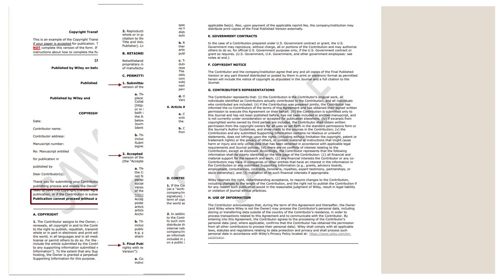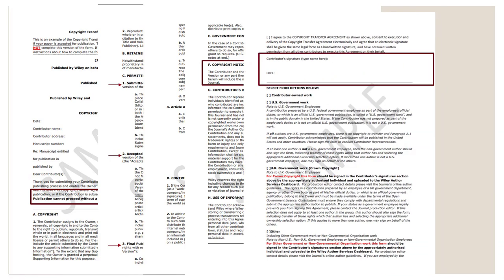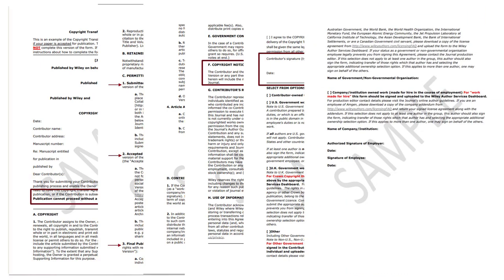Right here on page four, it says copyright notice — so Wiley will be placing that little C in a circle somewhere on the article that you are publishing with them. On the next page, you have to sign. Remember, page one said that you cannot proceed with publication unless you have a signed agreement. And then the last page covers employees of the US government. But this is pretty typical.